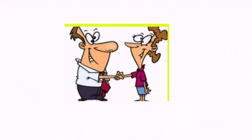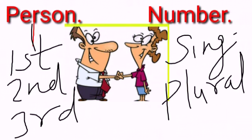Lekin English language mein, subject verb ka agreement basically person aur number pe hota hai.